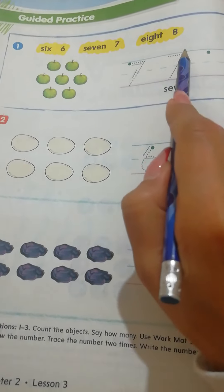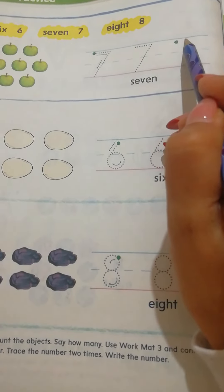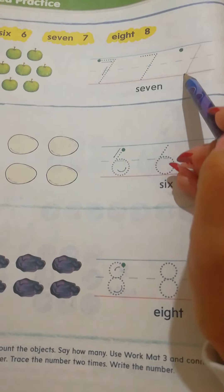1, 2, then we write 7. Look, we make a horizontal line, then a diagonal line. This is number 7.